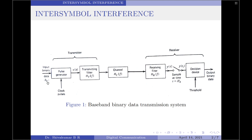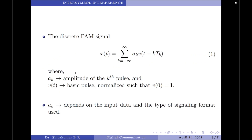The input signal consists of a binary data sequence B_K with a bit duration of 1 T_B seconds. This sequence is applied to a pulse generator that produces the discrete pulse amplitude modulated signal X(t), given by X(t) = Σ_k A_K · V(t − k·T_B), where A_K is the amplitude of the k-th pulse and V(t) is the basic pulse shape, normalized such that V(0) = 1.